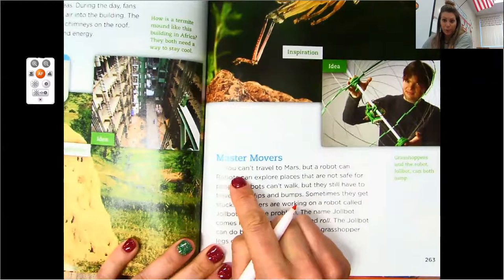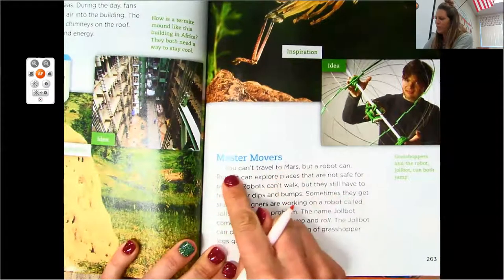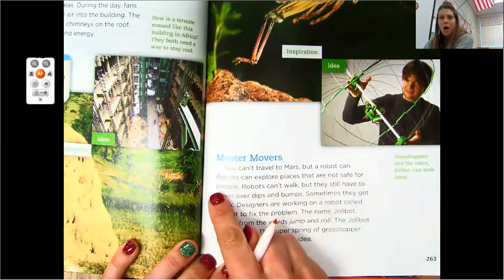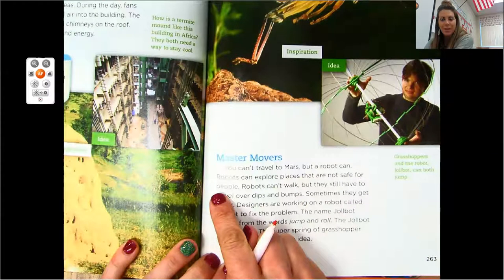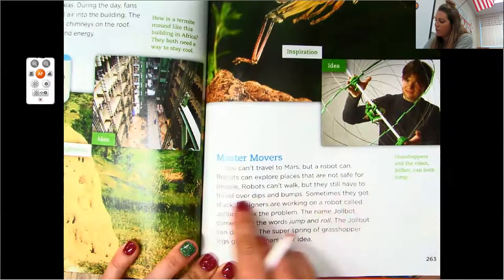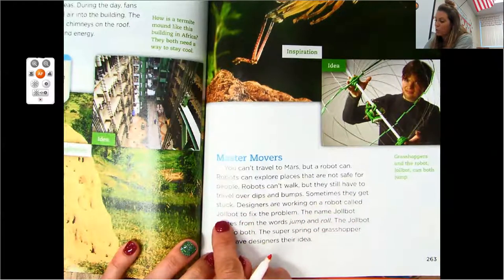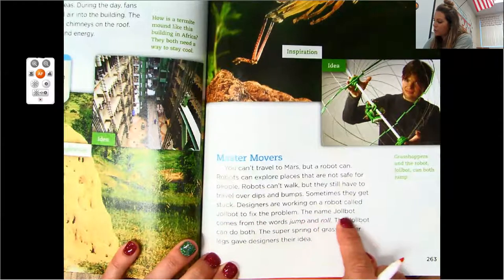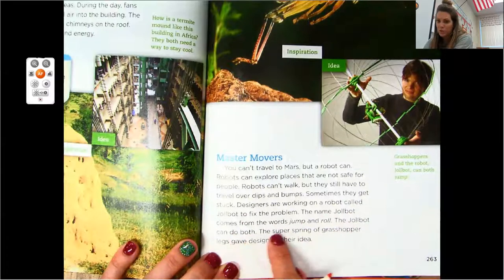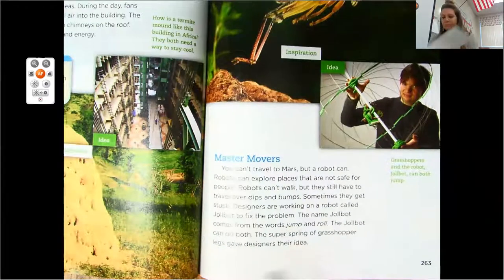You're tracking along with me. So remember, you should be looking at your book and reading with me. Master movers. That's our heading. You can't travel to Mars, but a robot can. Robots can explore places that are not safe for people. Oh, just like our Red Rover. Remember we talked about that a couple weeks ago when we read that passage about Mars? Robots can't walk, but they still have to travel over dips and bumps. Sometimes they get stuck. Designers are working on a robot called Joelbot to fix the problem. The name Joelbot comes from the words jump and roll. The Joelbot can do both. The super spring of grasshopper legs gave designers their idea.